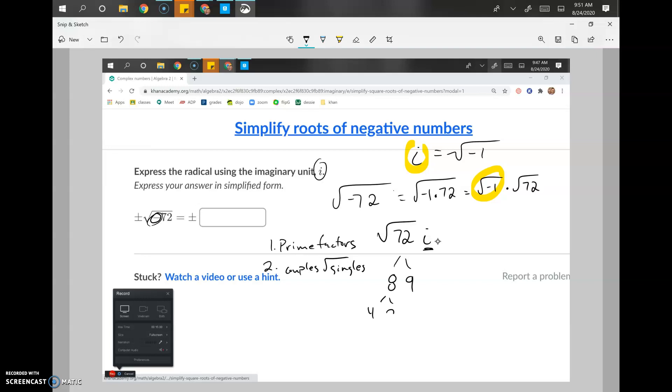8 times 9 gives us 72. Those aren't prime numbers, we can keep breaking them down. 4 times 2. 2 is prime, 2 is done. 4 is not, 2 times 2. 2 is done, 2 is prime. 9 is not, 3 times 3. Okay, so now you can see we've got five. 72 has five prime numbers.